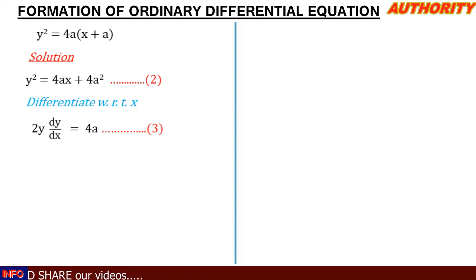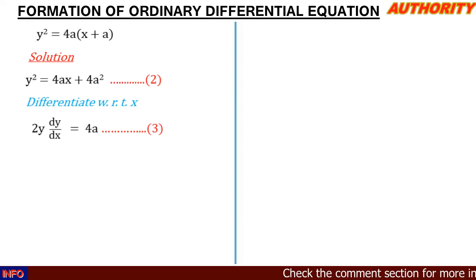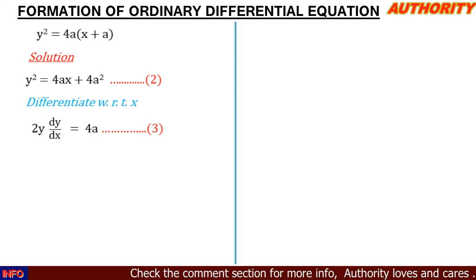So the first derivative gives us 2y dy/dx = 4a. Since we have only one arbitrary constant, we differentiate just once.